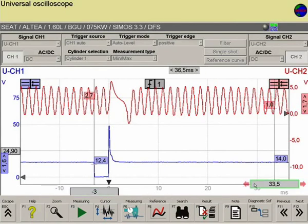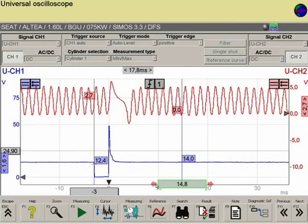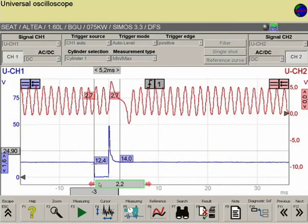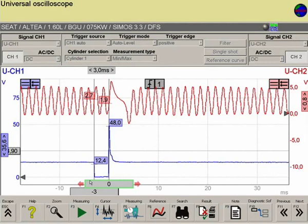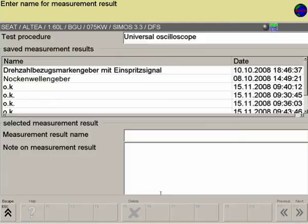Press F6 to save the frozen signal curves. They can then be used for comparison with other curves at a later date. When they are being saved, the sensor name and type of vehicle model can be entered in detail.